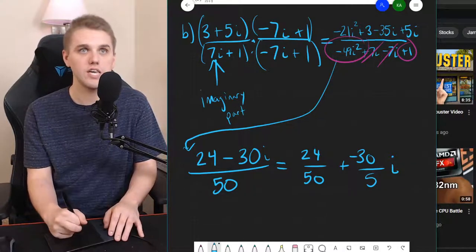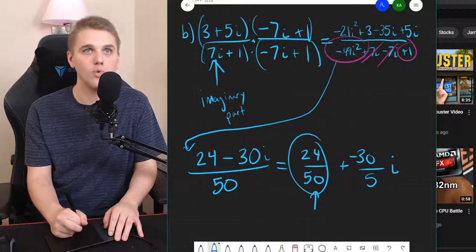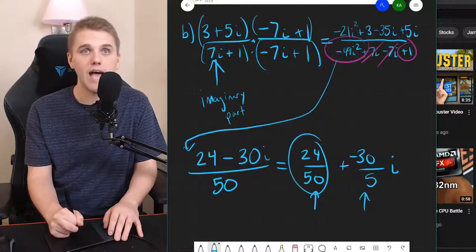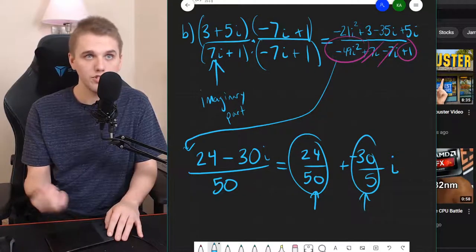That way you can clearly see that the real part is 24 over 50 and the imaginary part is negative 30 over 50, which is just negative 6.